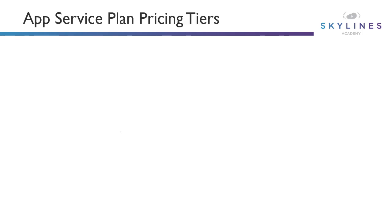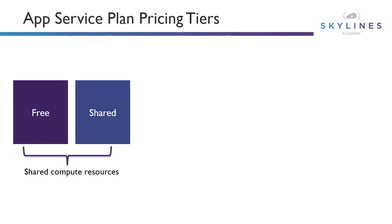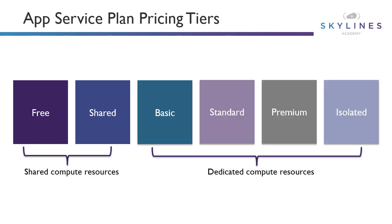Looking at pricing tiers in more detail: first, there are the shared tiers — free and shared — which run apps on the same Azure VM as other App Service apps, including apps from other customers. CPU quotas are allocated to each app and resources cannot be scaled out. Then there are dedicated compute resource plans: basic, standard, premium, and premium v2. These run your apps on dedicated Azure VMs so only apps in the same App Service Plan share compute resources. The higher the tier, the more VM instances are available for scale out. Finally, there's the isolated tier, also known as App Service Environments, which runs dedicated Azure VMs on dedicated Azure Virtual Networks, providing additional network isolation on top of compute isolation with maximum scale-out capabilities.